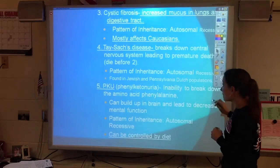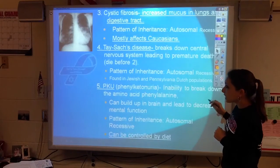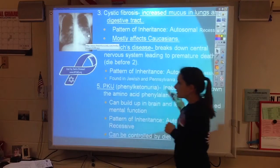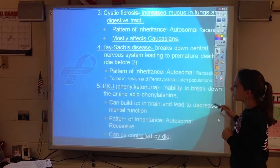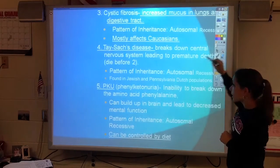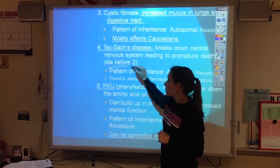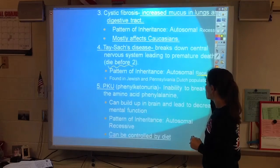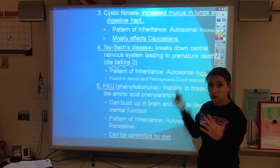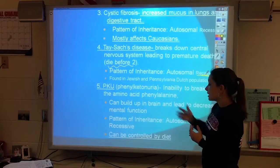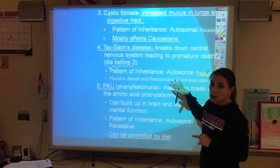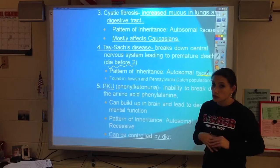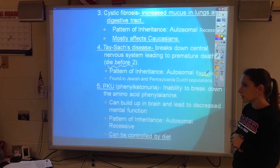Tay-Sachs is actually a genetic disease that leads to breakdown of the brain, and those affected usually die before age two. It is recessive, so we would give a lower case letter to the recessive allele. It is found in certain populations because it arose in a Dutch mutation, and it's found in Jewish populations as well.